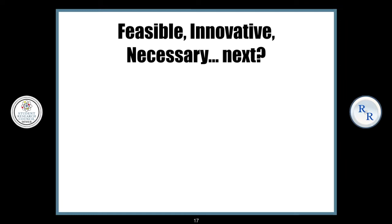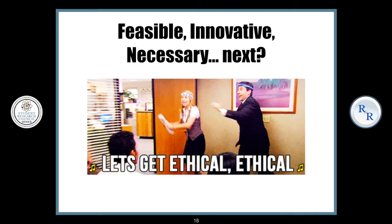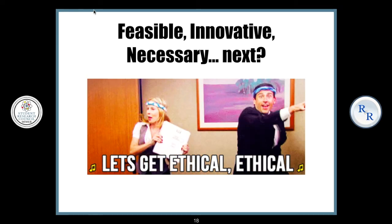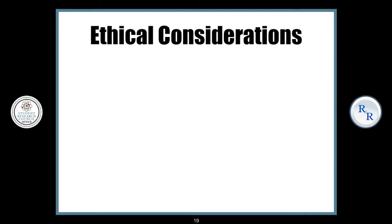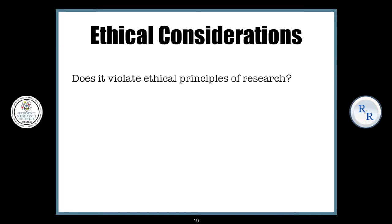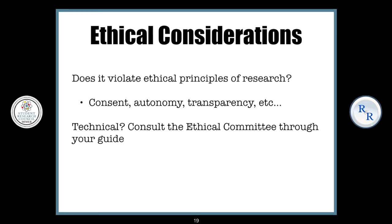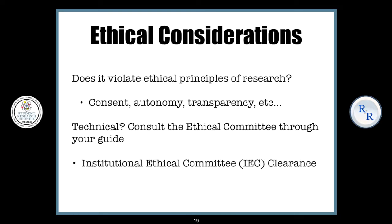Now we have covered feasibility, innovation, and necessity. What next? Ethics. I know it's not a favorite topic, but let's get ethical. The ethical considerations for a research question include: does it violate the ethical principles of research? Some ethical principles are consent, autonomy, transparency, etc. I'm going to leave a link for a document on ethical considerations of research in the description. If this gets too technical for you, consult the ethical committee through your guide. The institutional ethical committee of your college will give you clearance for your study before you start.